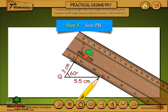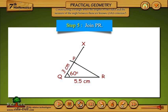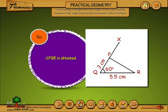Step 5: Join P and R. So, triangle PQR is obtained.